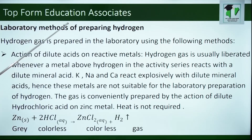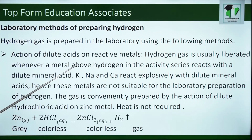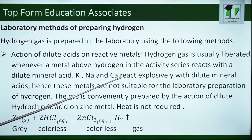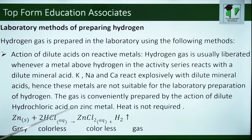How do we prepare hydrogen in the lab? It is prepared by the following methods. Action of dilute acids on reactive metals. Hydrogen gas is usually liberated whenever a metal above hydrogen in the activity series reacts with dilute mineral acid. For example, potassium, sodium and calcium react explosively with dilute mineral acids, hence these metals are not suitable for the laboratory preparation of hydrogen. The gas can be conveniently prepared by the action of dilute hydrochloric acid on zinc metal.